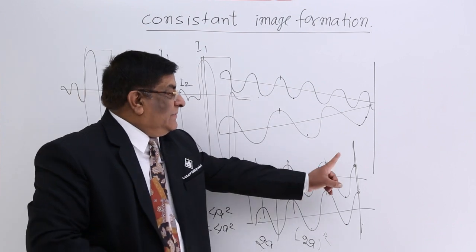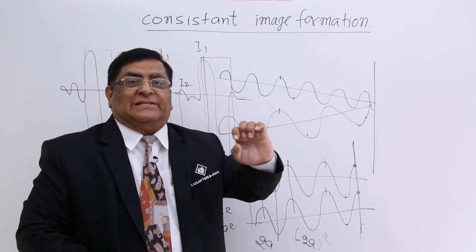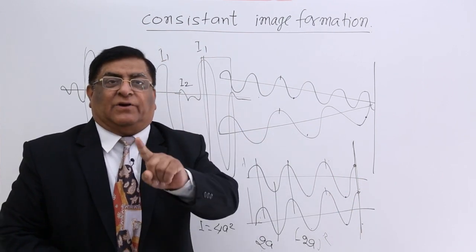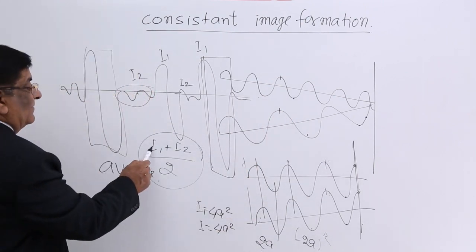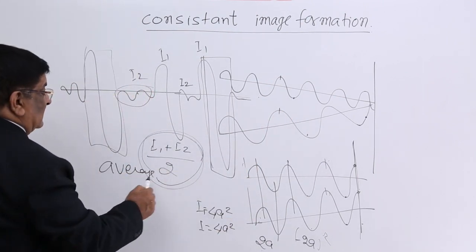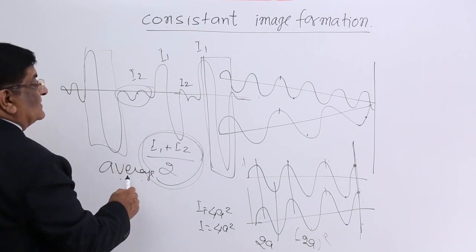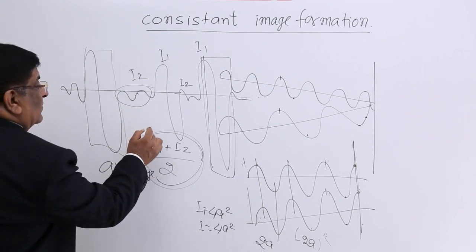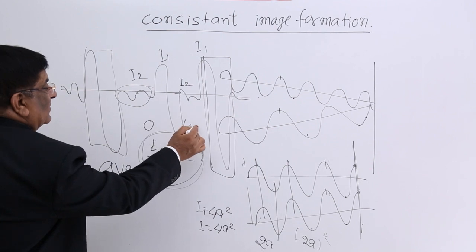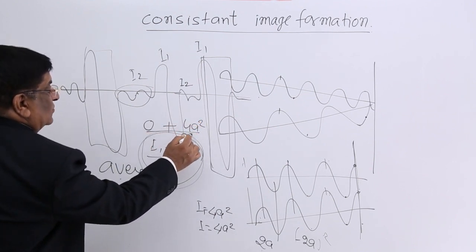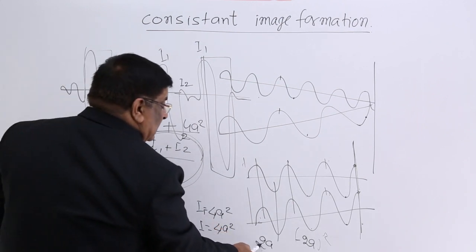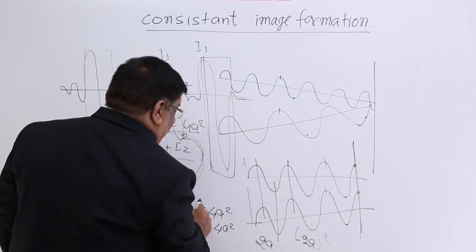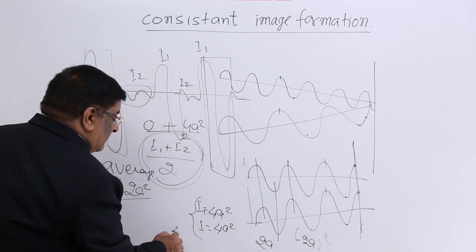So every time we see that it has got a brightness equal to 4a squared. And what was the brightness average in the first case? Average means sometimes it was 0, sometimes it was 4a squared. So average of the two was 2a squared. Now, in this second case, every time it was 4a squared — all the time, what we see is 4a squared.